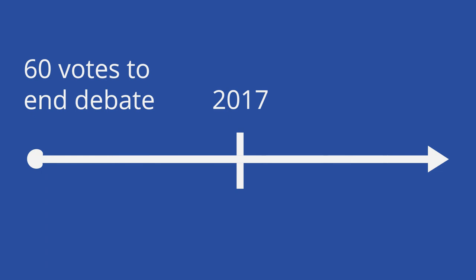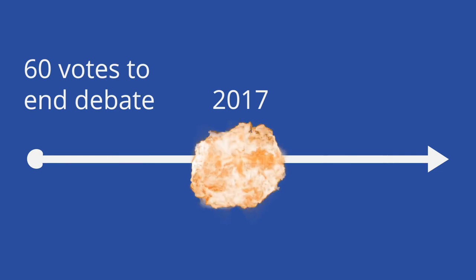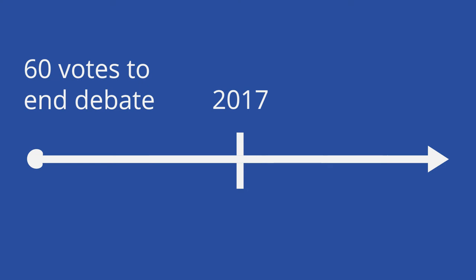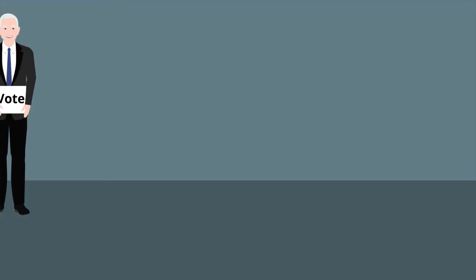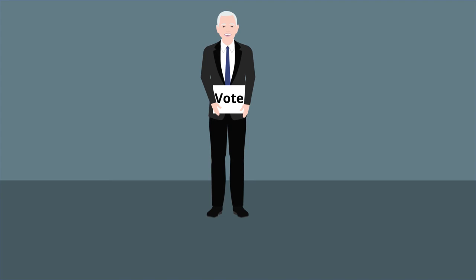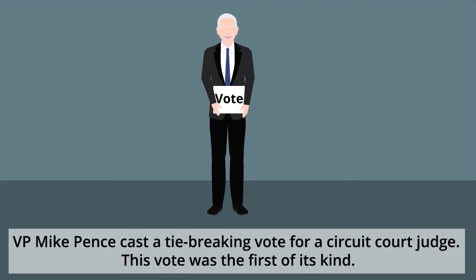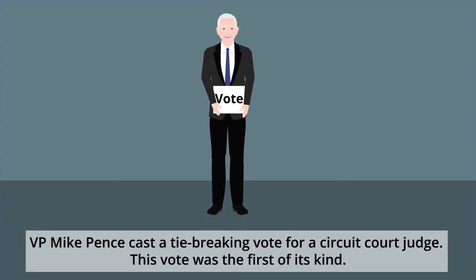Senate Majority Leader Mitch McConnell lowered the number in 2017 to further the confirmation process of Justice Neil Gorsuch, whose Senate vote lacked the 60 votes. This action became known as the nuclear option because it blew up precedent and harmed bipartisan relations. After the debate ends, the Senate then votes on the nomination, which requires a simple majority. The Vice President can cast a deciding vote in the case of a tie, but this has never been done for a Supreme Court Justice and happened for the first time for a circuit court judge in 2018.